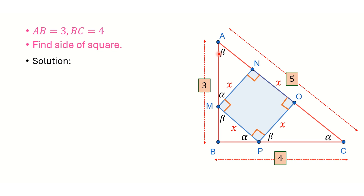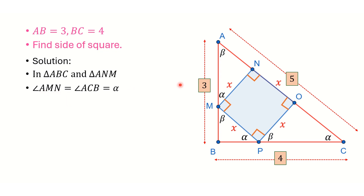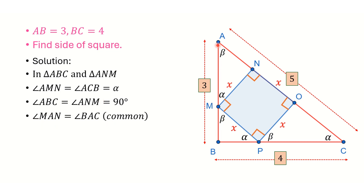Now I will use the idea of similarity. Consider triangle ABC (the bigger triangle) and triangle ANM. In these two triangles: angle AMN = angle ACB = alpha, angle ABC = angle ANM = 90 degrees, and angle MAN = angle BAC (common angle). So these two triangles are similar: triangle ABC ~ triangle ANM.